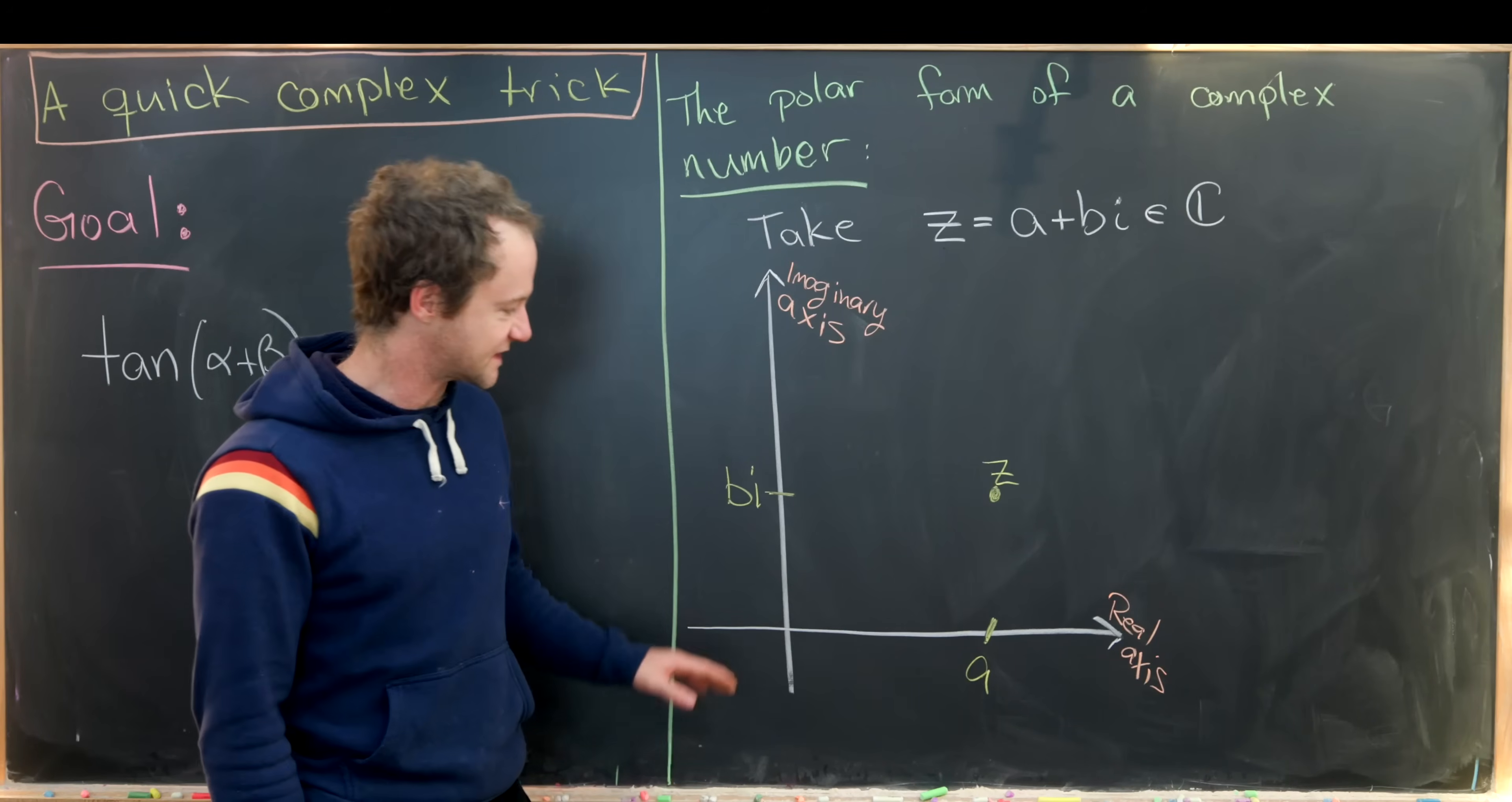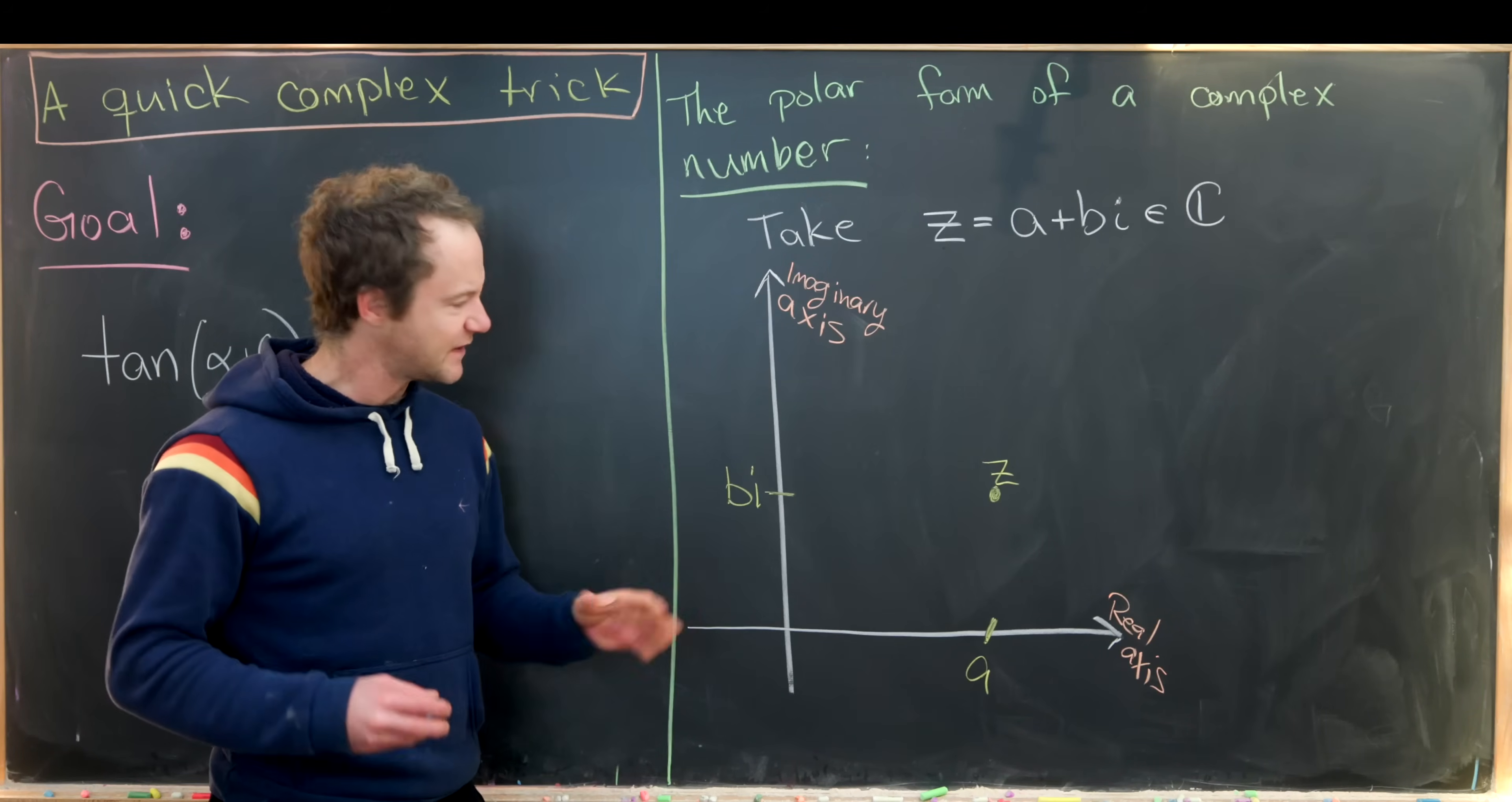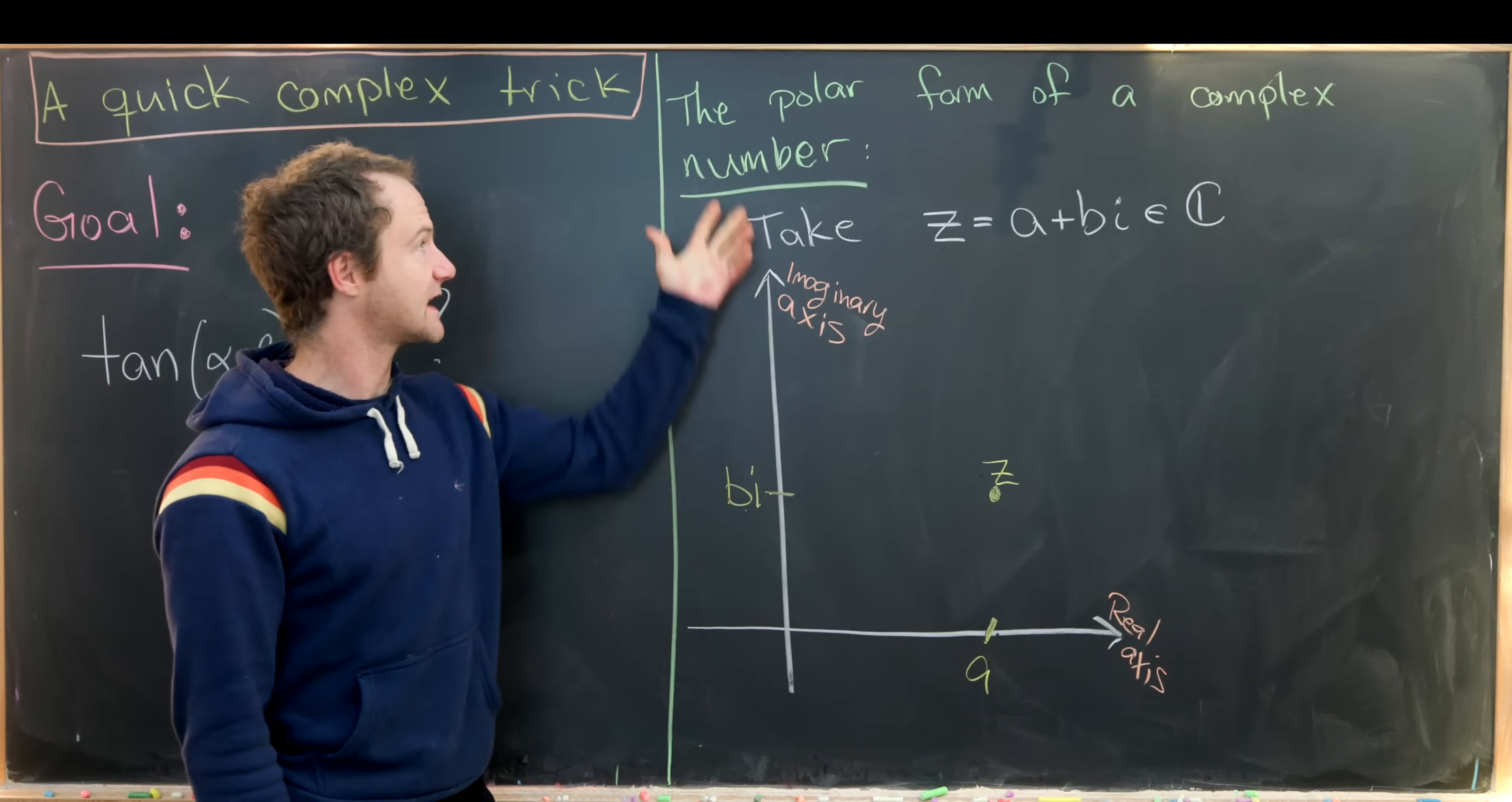And now let's build the complex plane. Horizontally, we have a real axis, and vertically we have an imaginary axis. So that means all of the pure real numbers are along this horizontal axis, and all of the pure imaginary numbers are along this vertical axis. And everything else is somewhere else in this plane. So here I've put our point z, which again is a plus bi, so that means it's a units along the real axis, and b units along the imaginary axis, taking the form b times i. Our goal is to build the polar form of this.